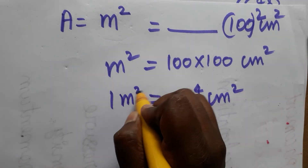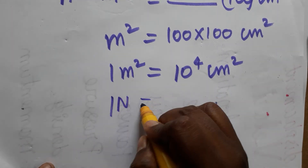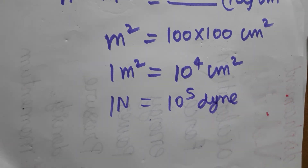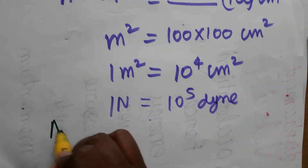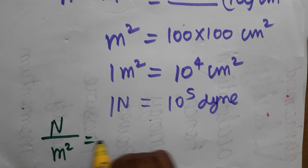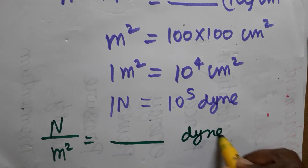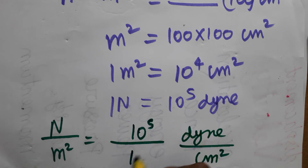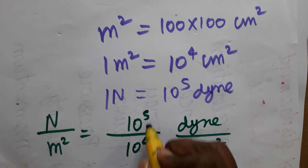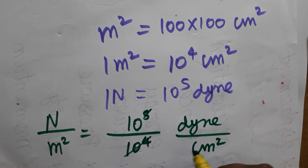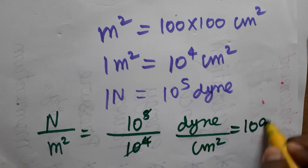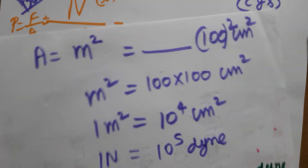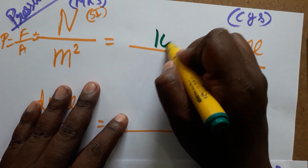Already we learned one Newton is equal to 10⁵ dyn. Now we are going to convert Newton per meter square to dyn per centimeter square. Newton is 10⁵, meter square is 10⁴, so 10⁵ divided by 10⁴ — the powers cancel leaving 10. So one Newton per meter square equals 10 dyn per centimeter square.